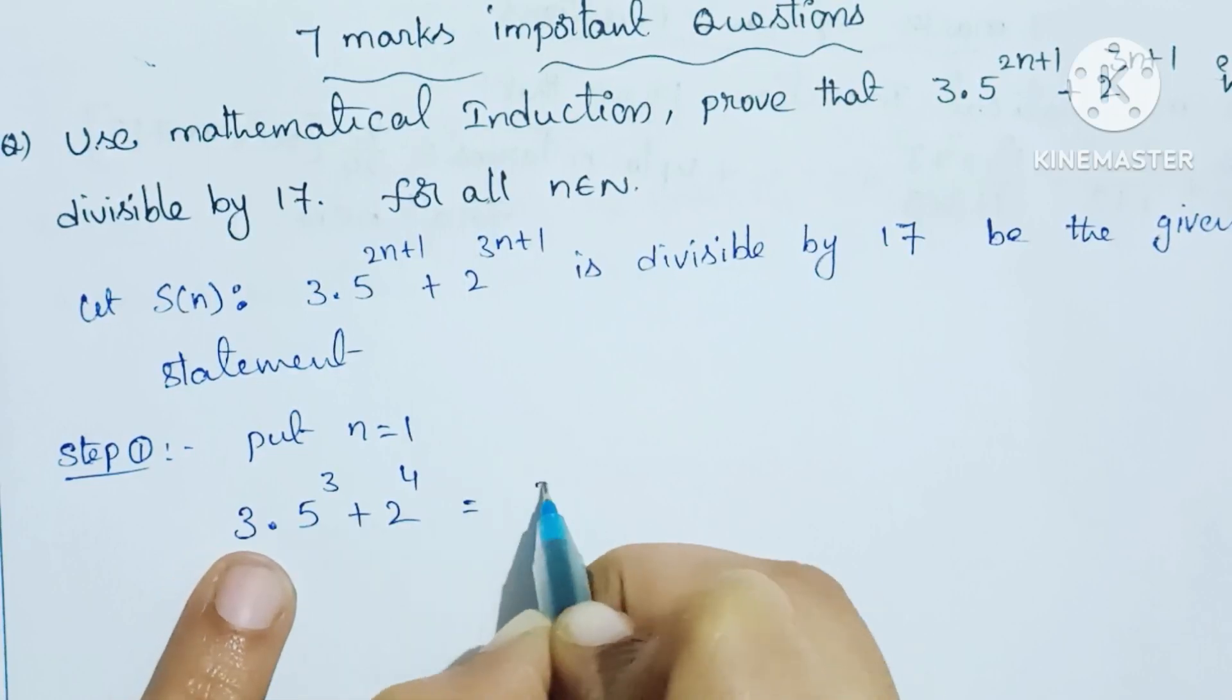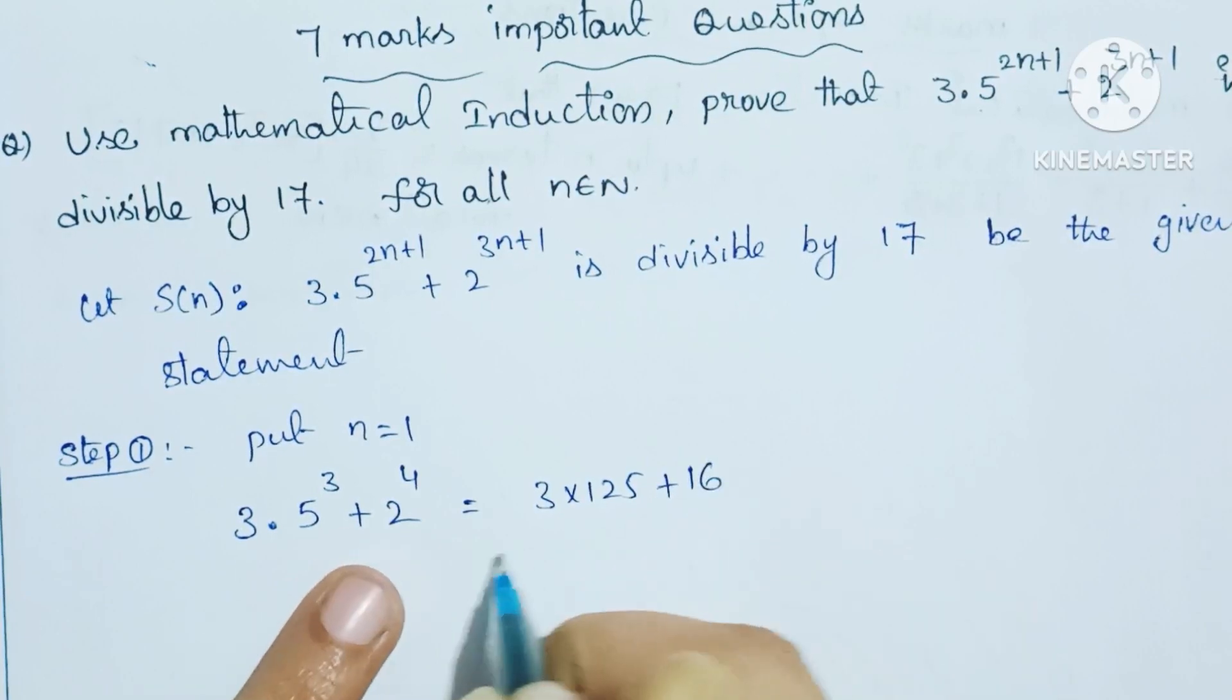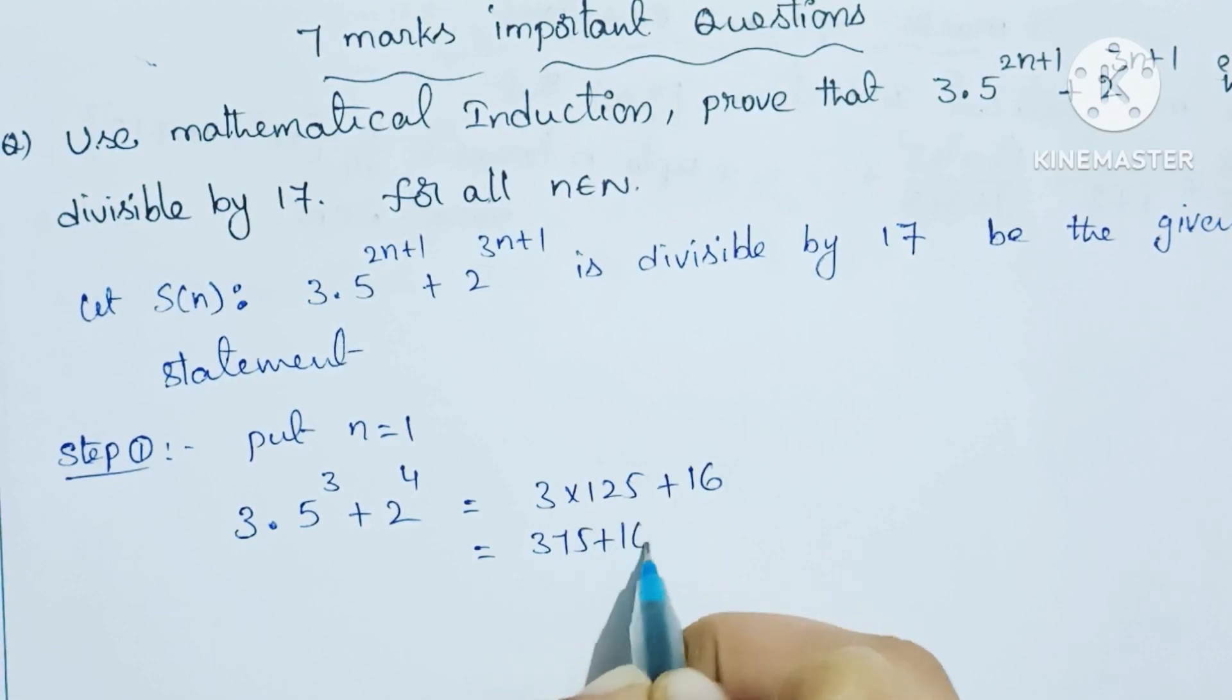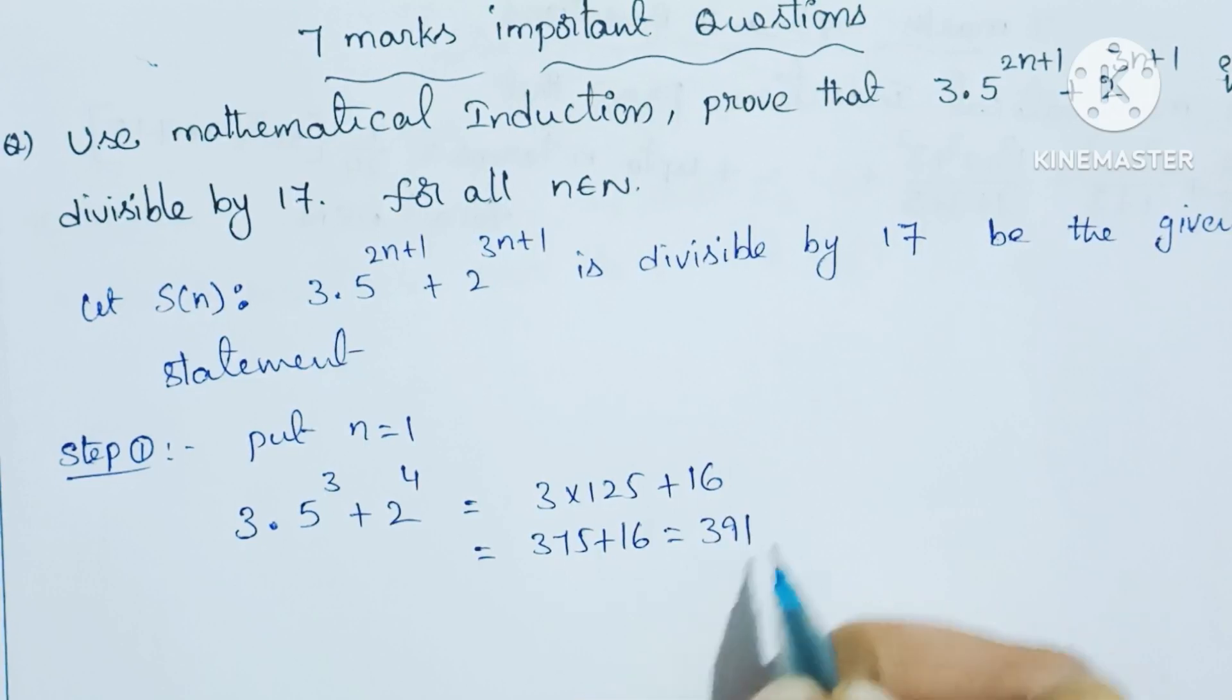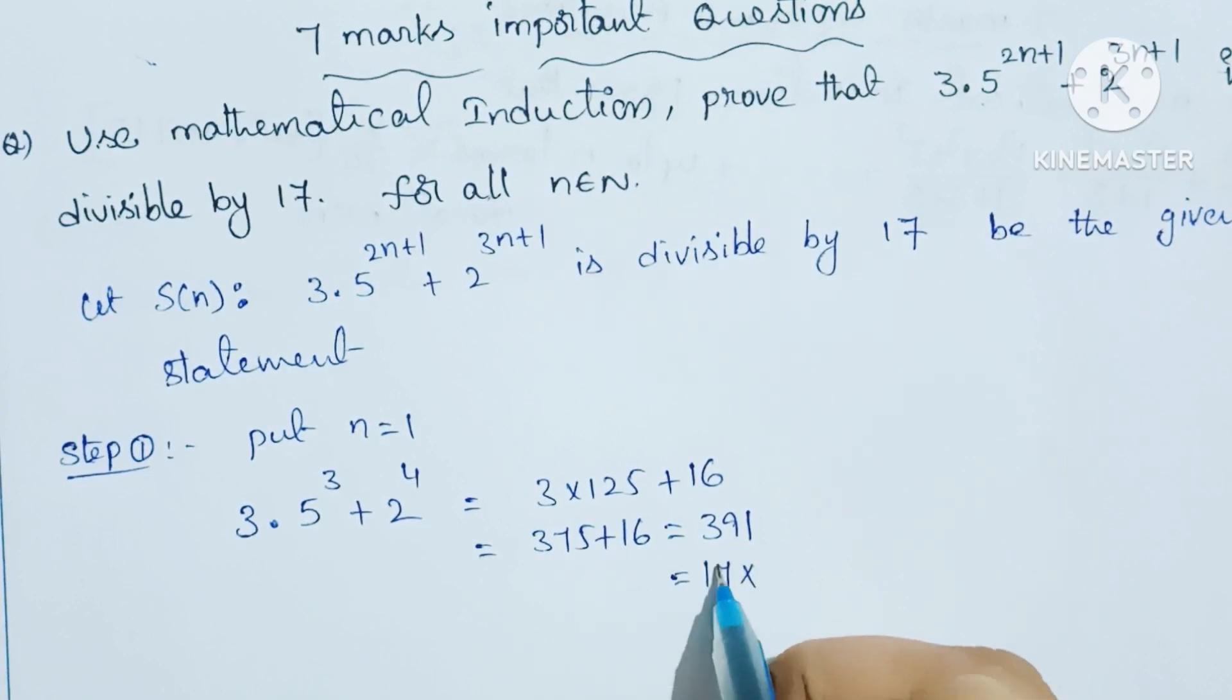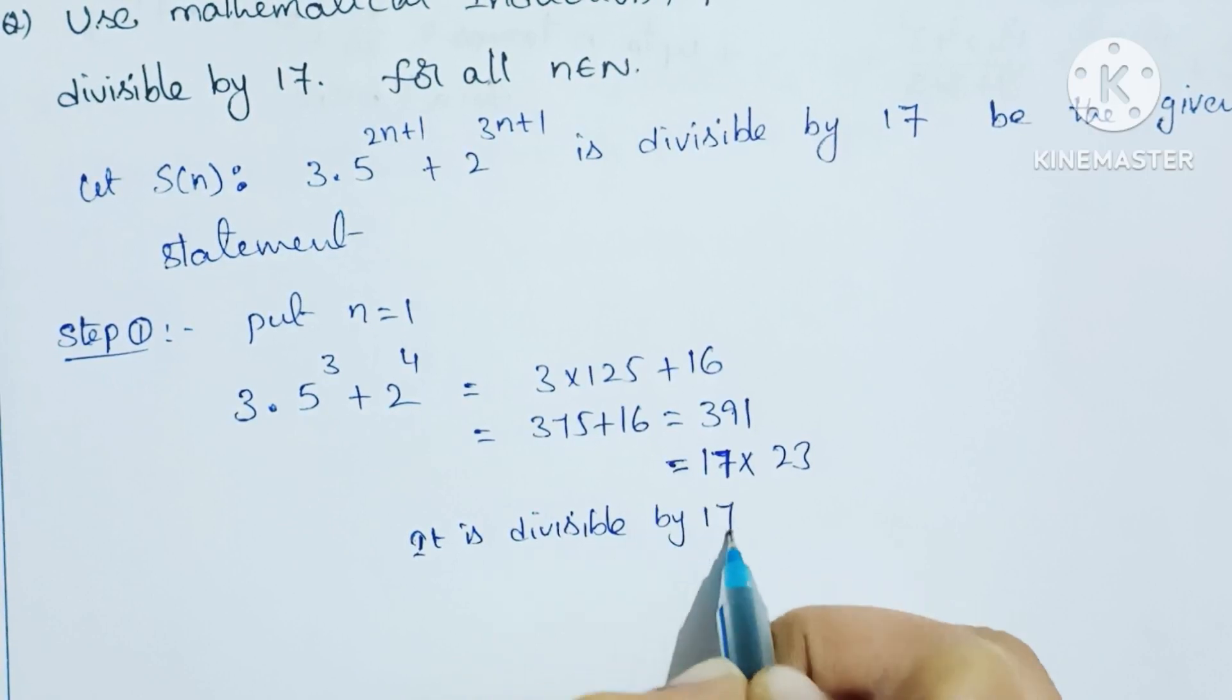3 into 5 to the 3rd is 3 into 125, which is 375, plus 2 to the 4th is 16. That equals 375 plus 16, that equals 391. This is 17 into 23. So it is divisible by 17.